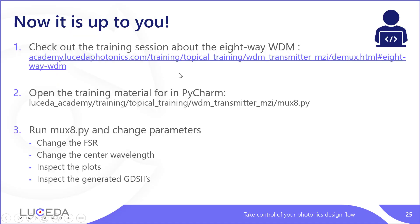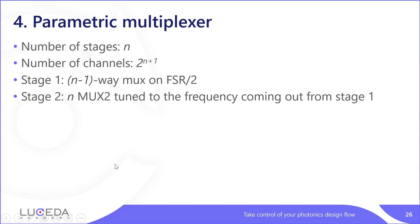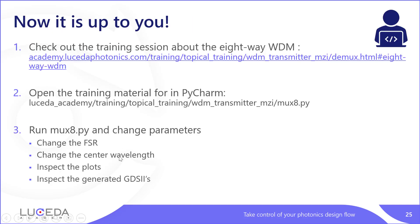You can go on Lucida Academy and check out the training session about the eight-way WDM, or open the training material in PyCharm and play around like you've done for the previous two MOOCs. You can change the FSR, change the center wavelength, inspect the plots, and try to understand what is going on.